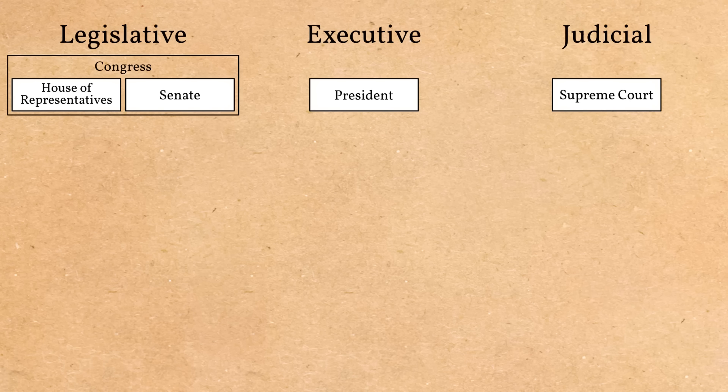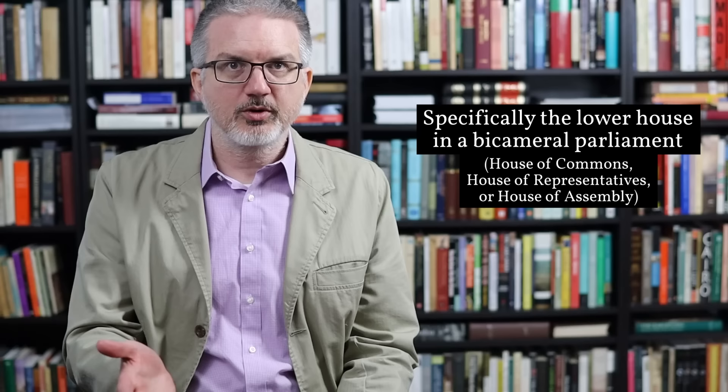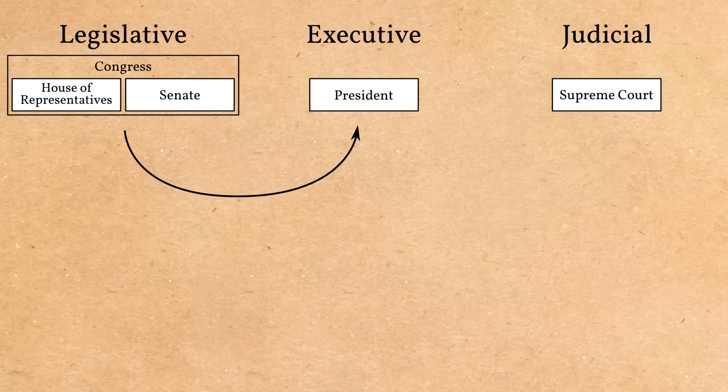One of the questions the framers of the Constitution had to answer was how they were going to get the president chosen. One obvious choice would be to have him chosen by Congress — that would essentially make it a parliamentary system, like in most English-speaking countries where parliament decides who the prime minister is going to be. The framers — the men who met in Philadelphia in the summer of 1787 and drafted the Constitution — did not want to do that. They wanted to maintain a strict separation between the executive branch and the legislative branch.